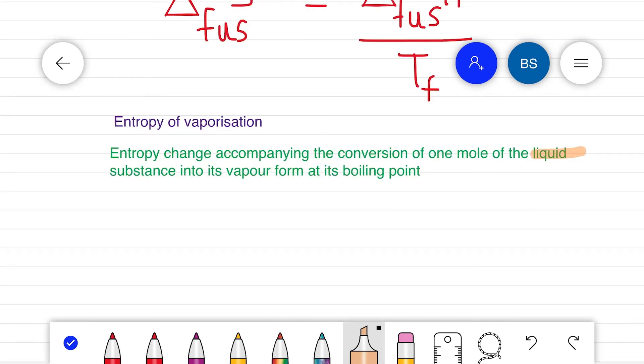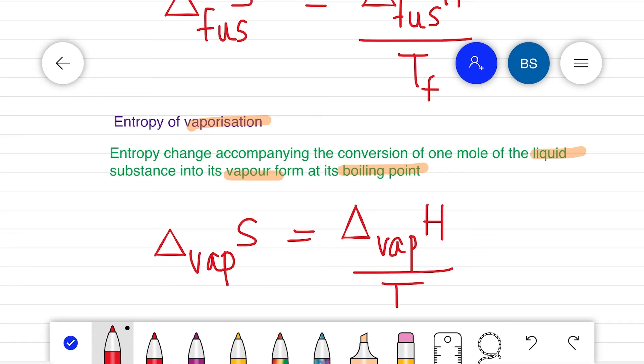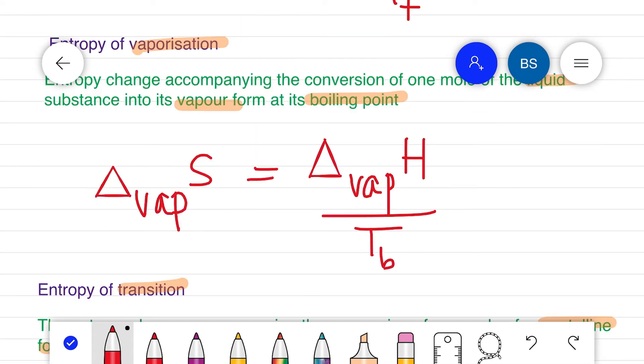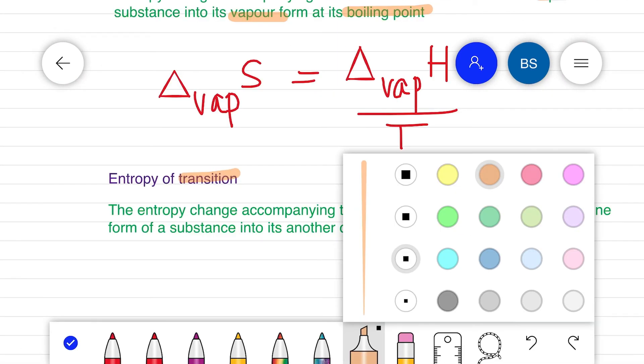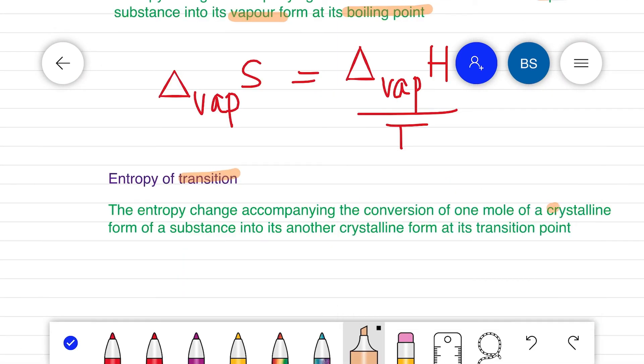Let's define the entropy for vaporization where one mole of liquid substance is converting to its vapor form. The entropy change accompanying this conversion is given by delta vaporization entropy equals delta vaporization enthalpy divided by TB, since the conversion is happening at its boiling point and it is represented by the term TB.